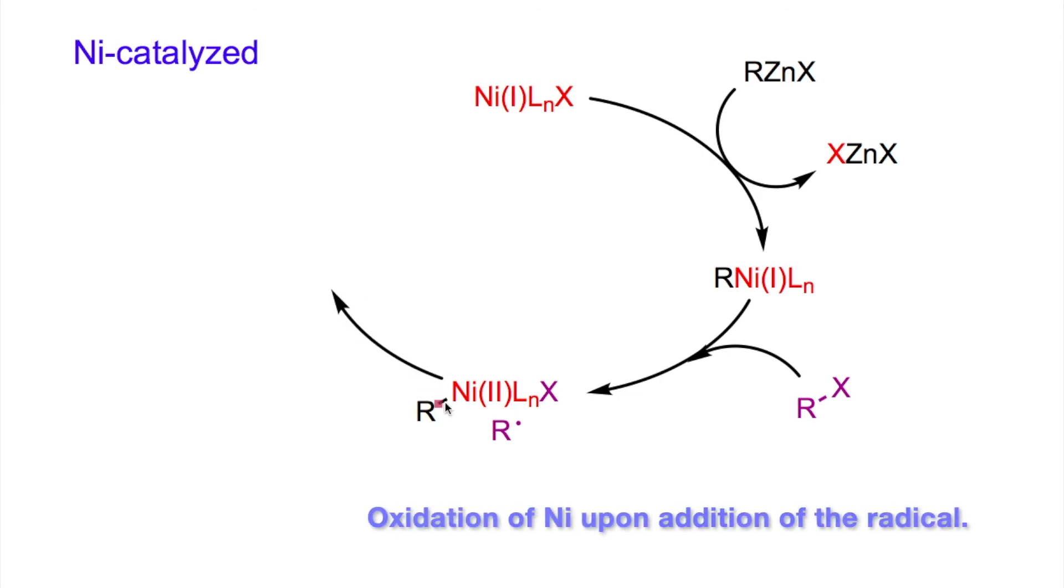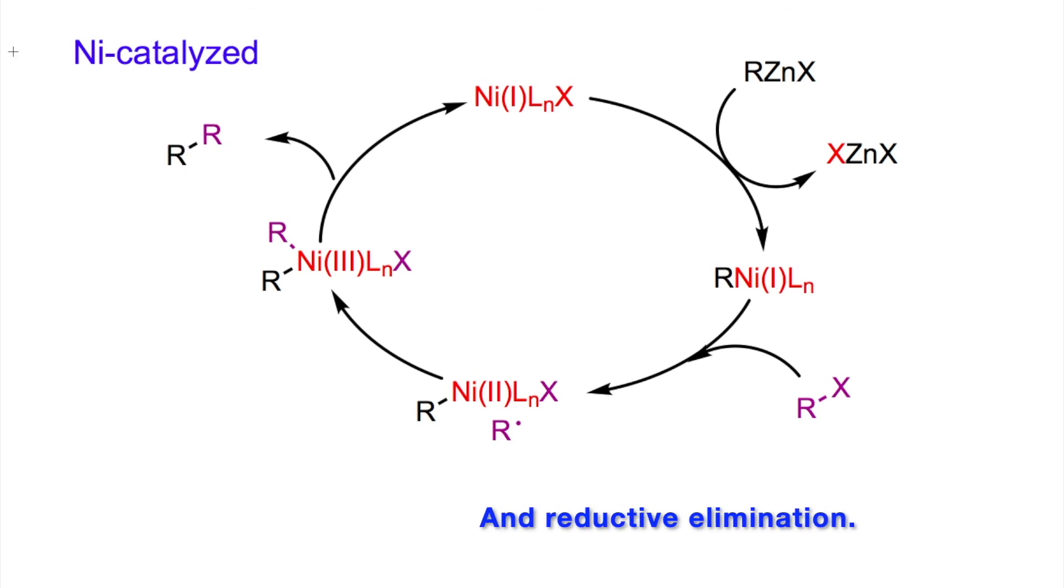Oxidation of the nickel II complex to nickel III takes place upon the addition of the radical. Reductive elimination delivers the final product and regenerates the catalyst.